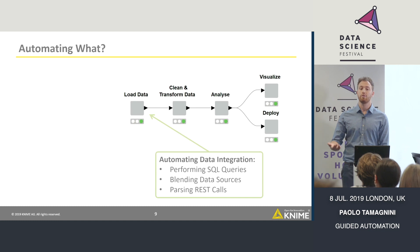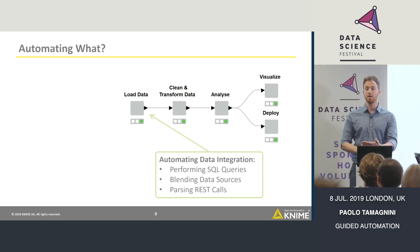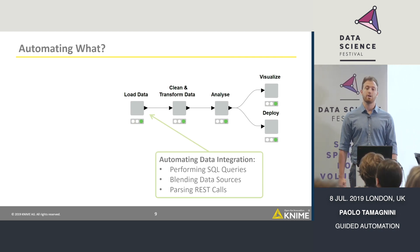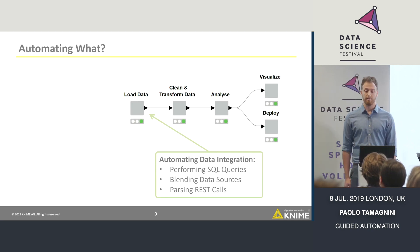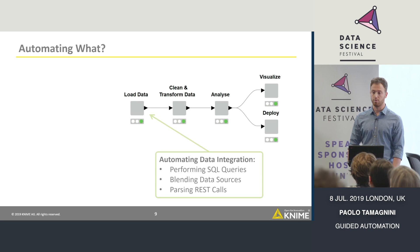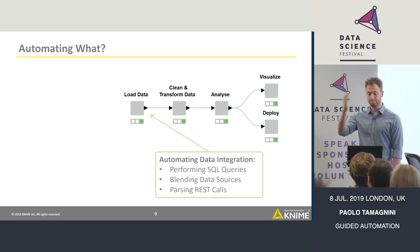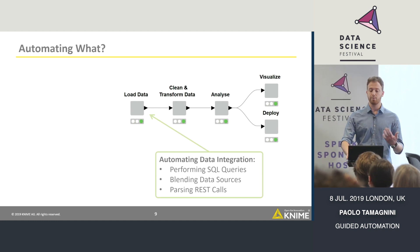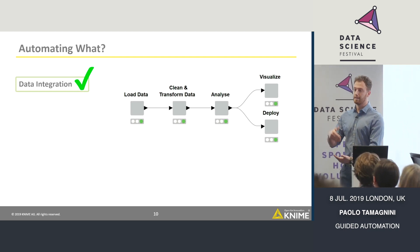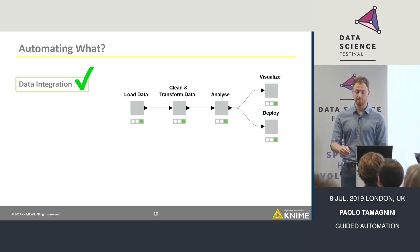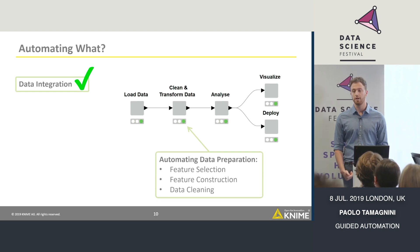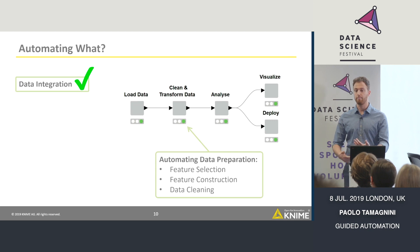How do you do all this automation? For the part of loading the data — once it's known where the data is coming from — you can automate the composition of SQL queries when using certain kinds of databases. When you need to blend different data sources, you can automate this too. Or, for example, making REST calls to get data directly from REST services. But once we do that, there is something more complex: preparing the data in the right way for the model — cleaning and transforming the data.